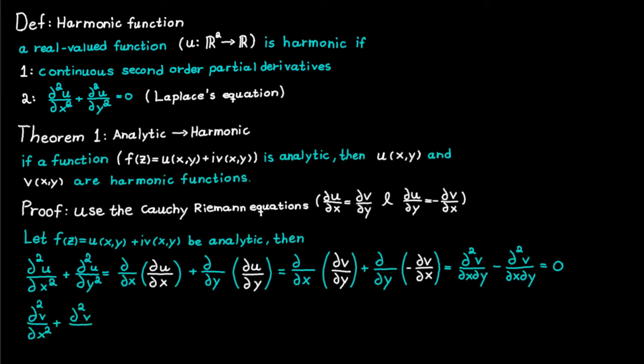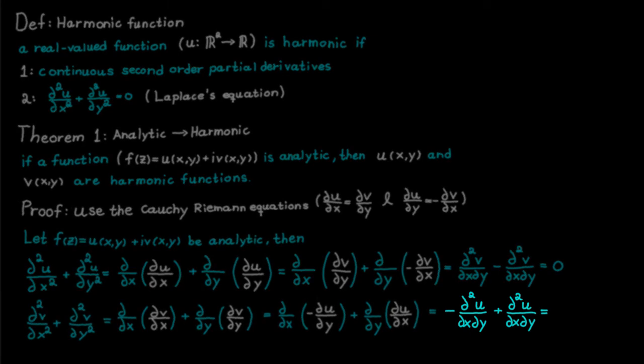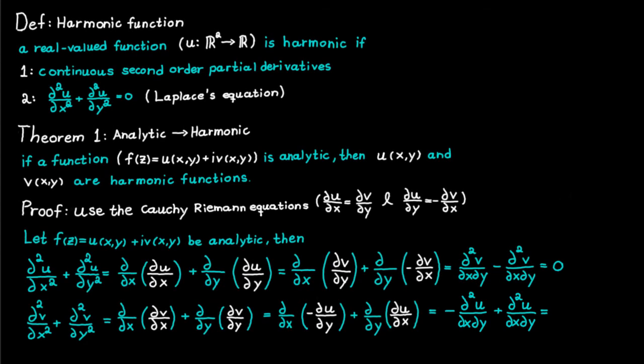And now we can do the exact same thing for function v instead. We start by rewriting the Laplace equation for function v with the help of the Cauchy-Riemann equations. And then we use the fact that the function u has continuous second order partial derivatives. So these two terms here are the same but with opposite signs. So the whole thing is equal to zero.